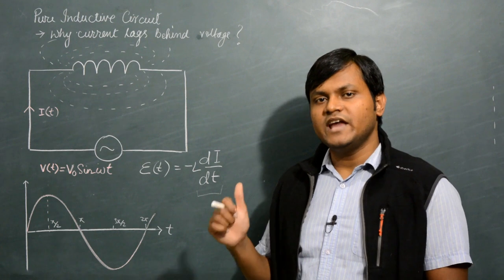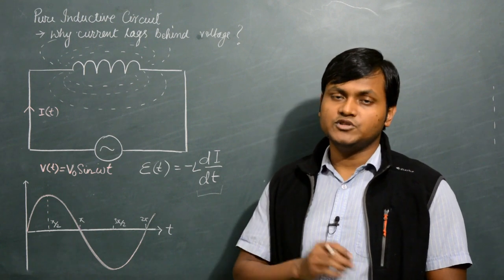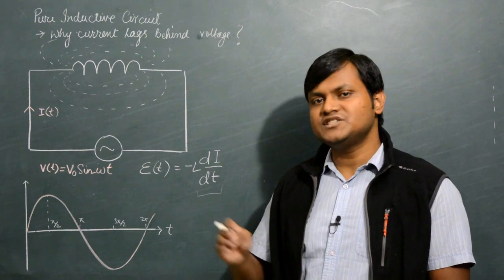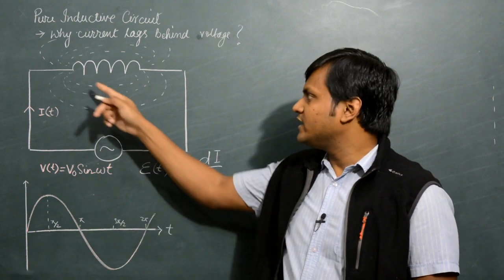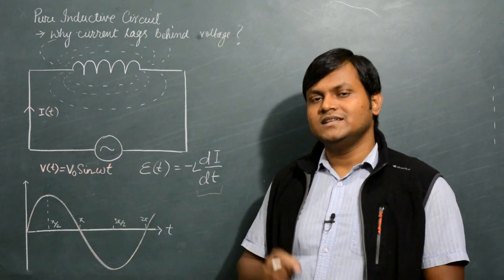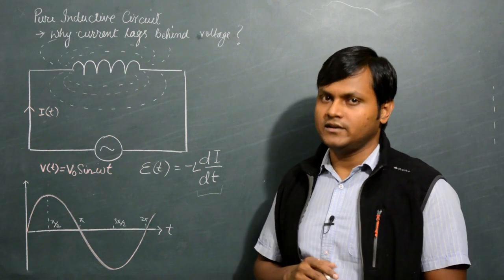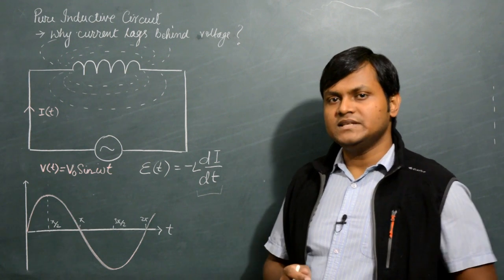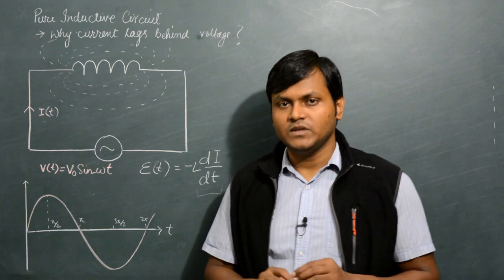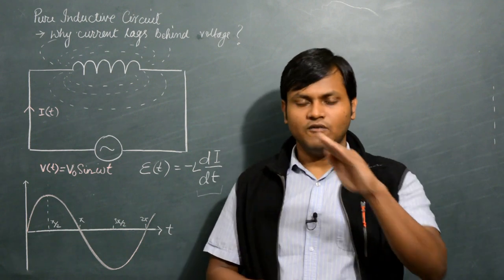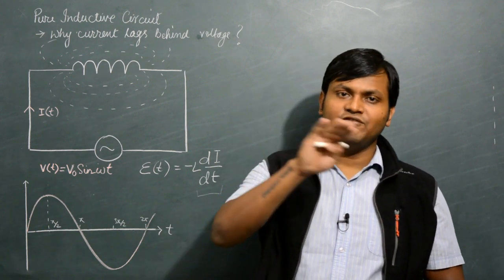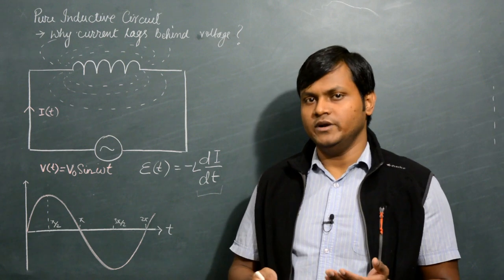If you compare this kind of inductive circuit with another circuit which contains a resistor instead of an inductor, the resistor would simply offer an opposition to the flow of current. So in the case of a resistor, if the voltage is rising and falling, the current would also rise and fall along with the particular voltage.